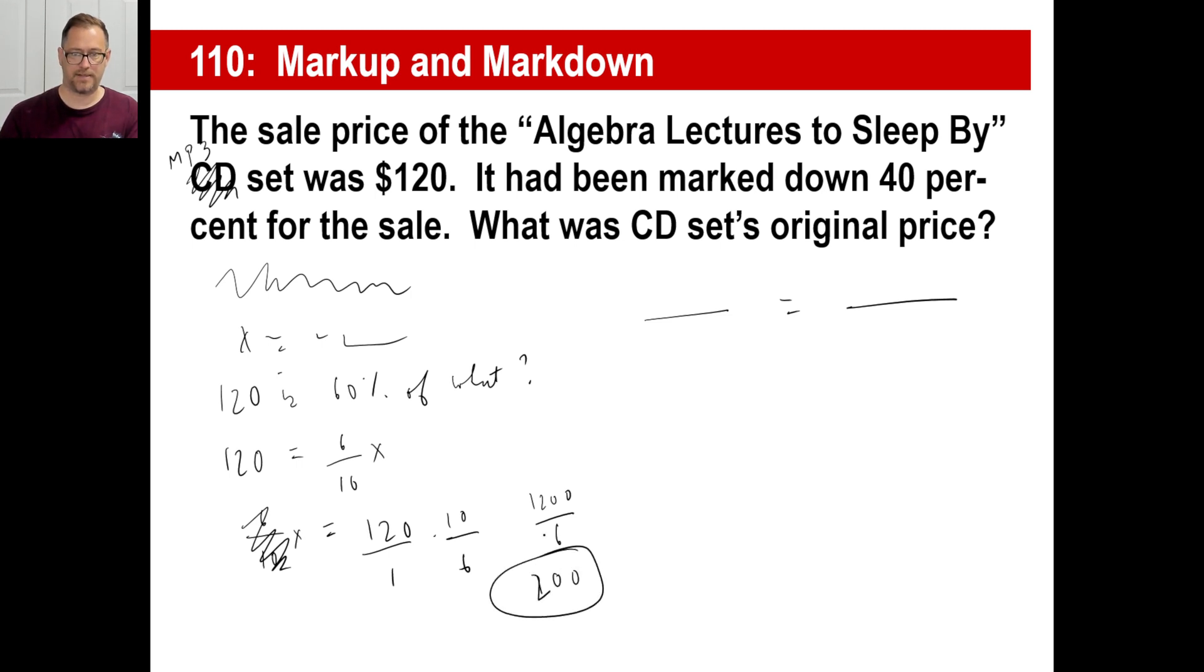So the MP3 set was $200. Well, let's try it this way. The sale price, blah, blah, blah, $120. Marked down 40%, so that means it's 60%. I got my 120, and I got my 60%. That's what I need to fill in the blank. What was the original price? Was that bigger than 120 or less than 120? Bigger.